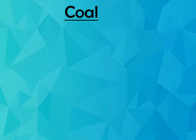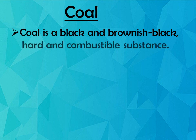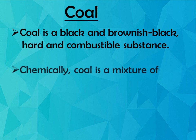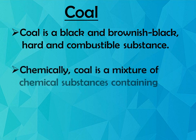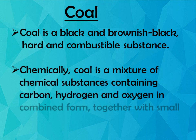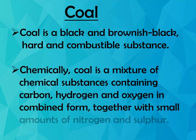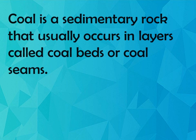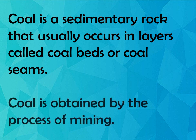Let us study coal in detail. Coal is a black and brownish-black, hard and combustible substance. Coal is a chemical substance containing carbon, hydrogen and oxygen in combined form, together with small amounts of nitrogen and sulfur. Coal is a sedimentary rock that usually occurs in layers called coal beds or coal seams. It is obtained by a process called mining.